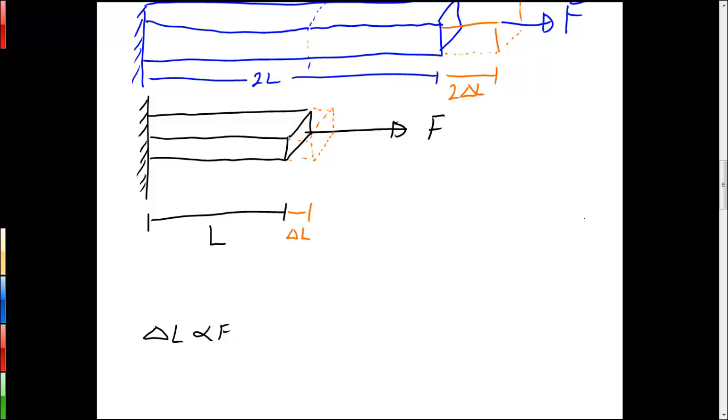This suggests that we can define something that we'll call the strain. We represent it by the small Greek letter epsilon. And we define strain as the change in length of the rod over the original length of the rod. And for a rod of a given cross section, that strain is proportional to the force that we apply to it.